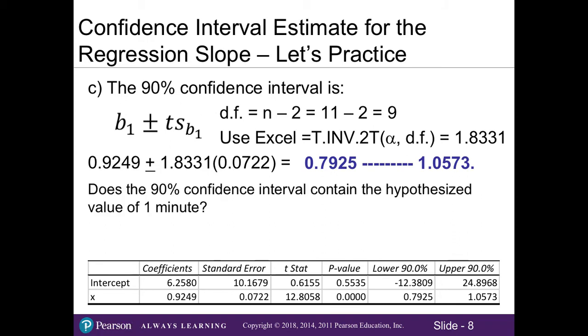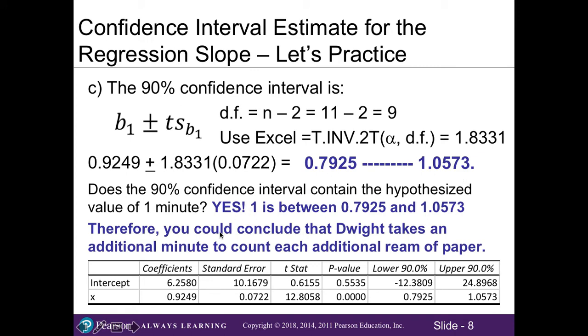So in Part C, we're asked to see if it really does take Dwight one minute to count each additional ream. In other words, we're going to examine our 90% confidence interval and see if it contains the hypothesized value of one minute because that's what we're interested in. So looking at our confidence interval estimate, we can see that yes, the hypothesized value of one minute is in between our 0.7925 and 1.073 confidence interval estimate. So in other words, we can conclude that Dwight takes an additional minute to count each additional ream of paper.